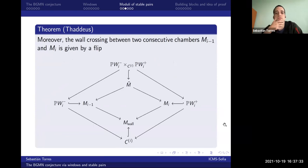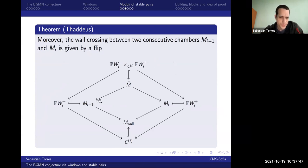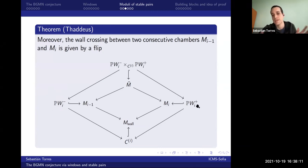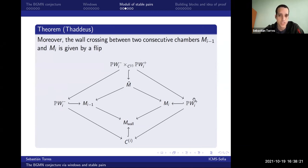Fixing lambda and the determinant, the stability condition is governed by sigma — a number you can move along. As you move sigma you hit different chambers called M_0, M_1, M_2, etc., with walls in between. Each two consecutive spaces are related by a wall crossing, and by Thaddeus there is a resolution mapping to both consecutive spaces. More interestingly, the last of these spaces carries a map to N — the moduli space we actually care about. This is a forget map: you remember the bundle and forget the section. If d equals 2g−1 exactly then this is a birational map since every such bundle has only one section, so it is generically bijective.